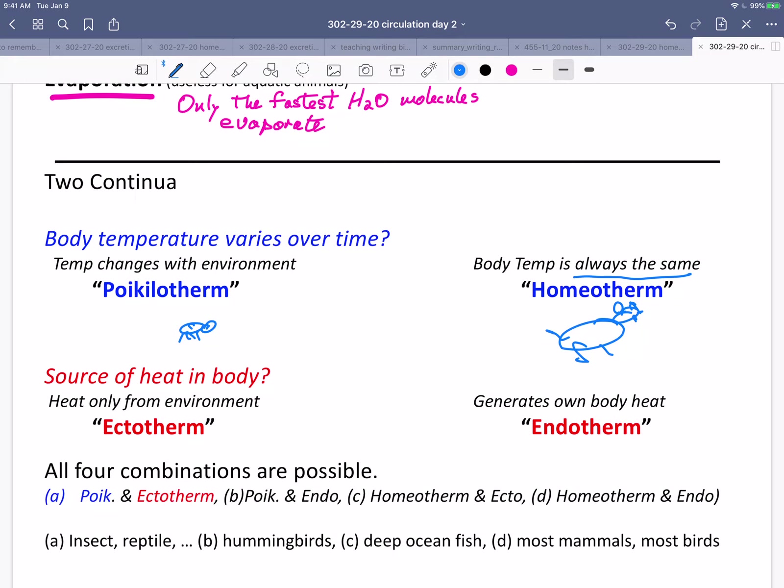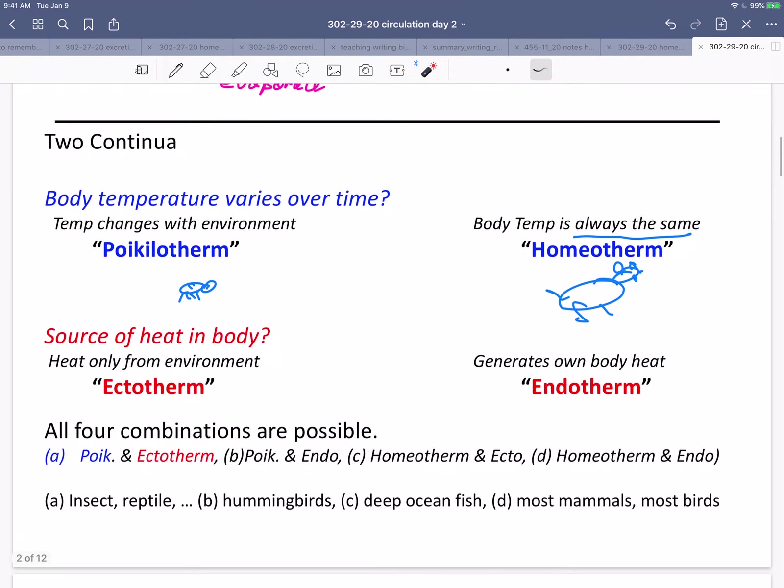We can also talk about the source of heat in a body, in which case we have ectotherms that get their heat only from the environment, ecto for outer, and endotherms that generate their own body heat. Endo, the heat comes from inside, endo.